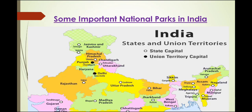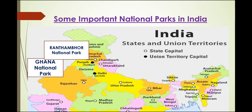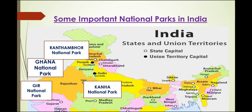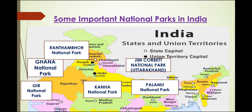Now we are going to mark some of the national parks of our country on the map. There are many national parks but we will mark only a few. First is Ghana National Park in Rajasthan. Ranthambhor National Park is also in Rajasthan. Gir National Park in Gujarat. Kanha National Park in Madhya Pradesh. Jim Corbett National Park in Uttarakhand. Palamu National Park in Jharkhand. Kaziranga National Park in Assam.